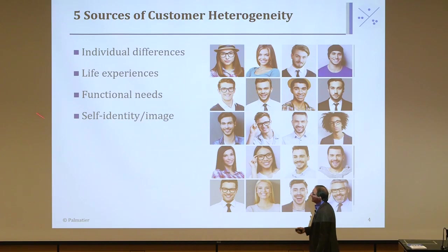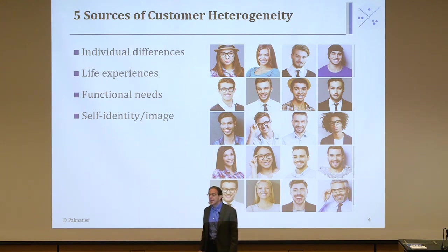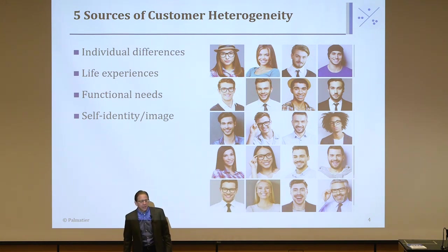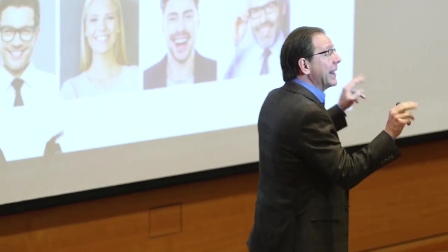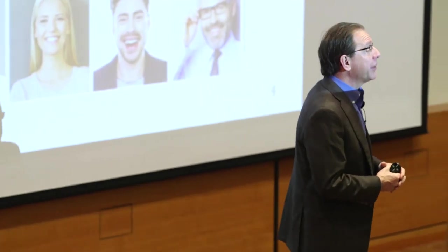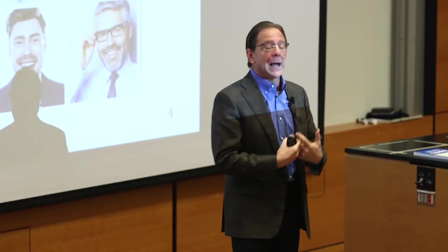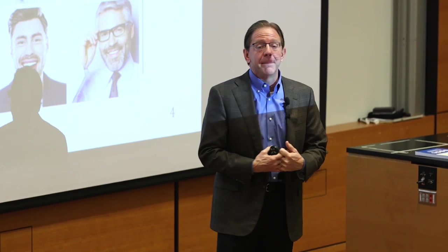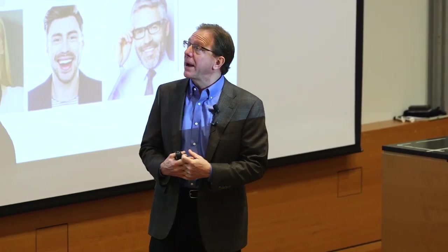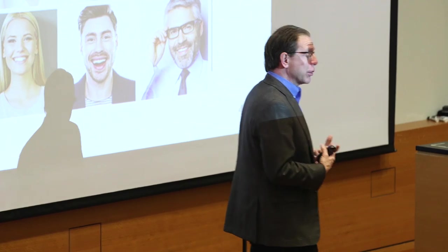The next source is self-identity and image. These are especially true for visual items — things that other people can see. If you look at certain groups of people, like those who identify as goth, they might want to wear dark makeup, leather or black clothes. If you look at motorcycle riders and Harley Davidson, they might want a leather jacket — that might be part of their image.